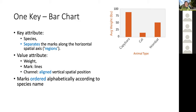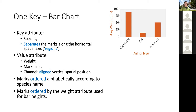In a bar chart, the key is a categorical attribute — there's no natural order between animal names, for example. You could order them alphabetically or by weight, imposing an order onto the categorical attribute. That's part of the design choice.